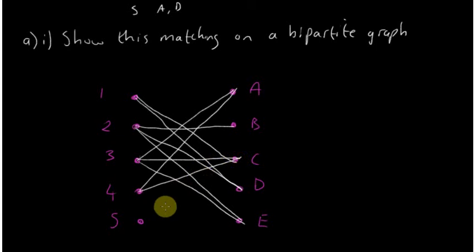Finally, applicant 5 is qualified to do jobs A and D. That shows the matching on the bipartite graph.